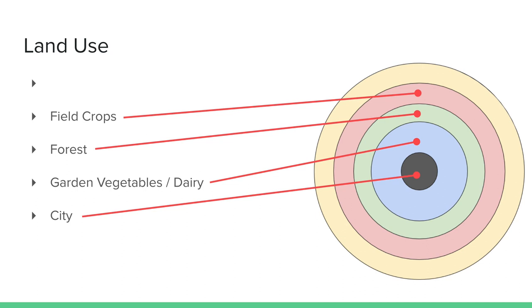But why wouldn't the forest be on the furthest ring out? Why do we need it right next to us? Wood is heavy — have you ever tried to move a tree? So the further away it is, the more labor-intensive and expensive it gets. You kind of need that forest resource relatively close. Next ring out: field crops — all your grains, your wheat, barley, corn. They don't spoil; keep them dry and they'll last a really long time in silos. And remember he's an economist — you have to grow a lot of it, so you need massive open spaces, hundreds and hundreds of acres.